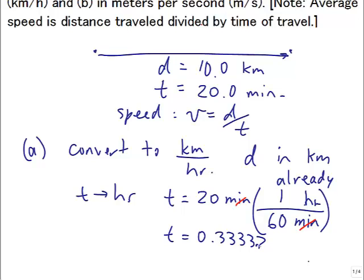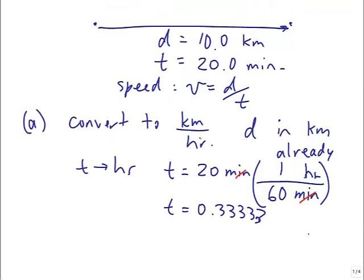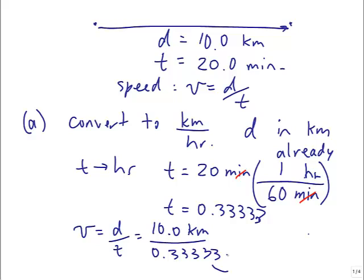I'm going to keep, let's say I keep, say, five significant figures, knowing that I'm going to keep three in the final answer. And then V is equal to d over t, it's equal to 10.0 kilometers, divided by 0.33333 hours, sorry, this is in hours.